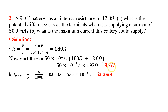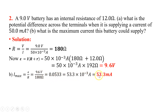For the second part of Question 2, we need to find the maximum current. We know that EMF equals the product of maximum current and total resistance. Arranging the equation and substituting the values, we find the maximum current to be 53.3 milliampere.